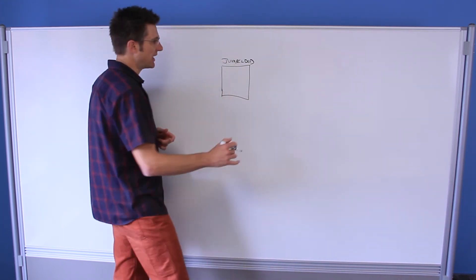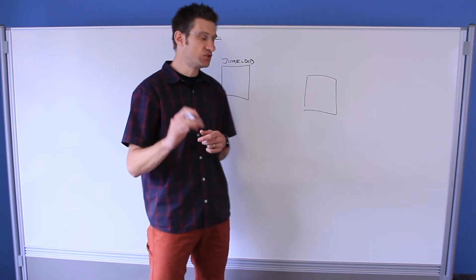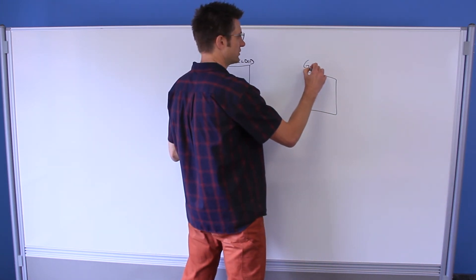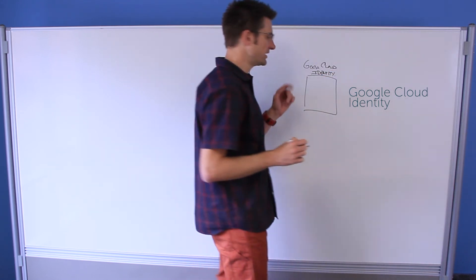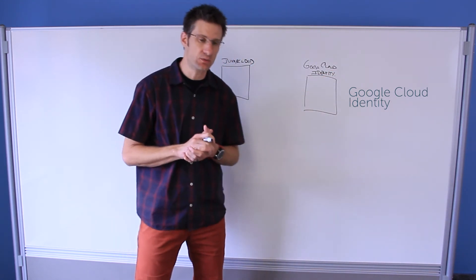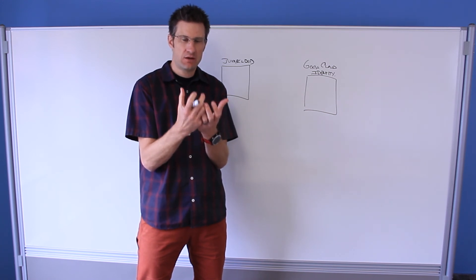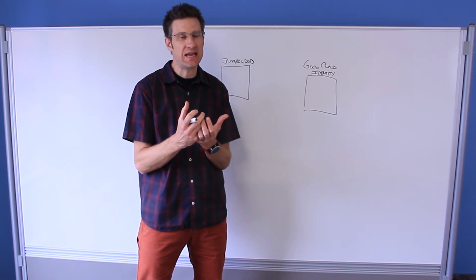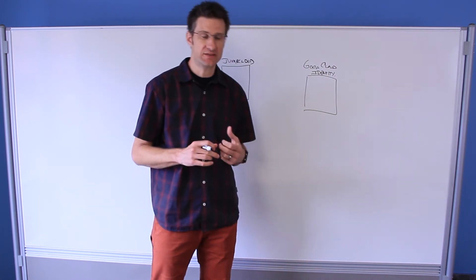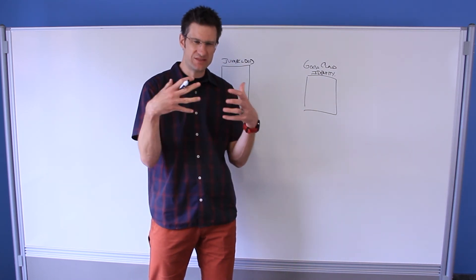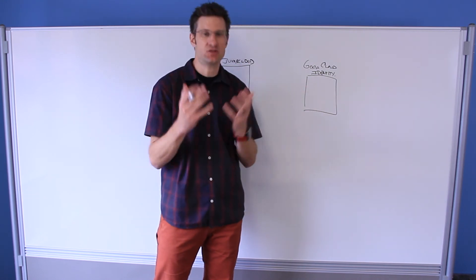So this box we are going to denote as Google Cloud Identity. The interesting release, this is a fairly recent release by Google, was to detach a Google user's identity from the services that the identity can incorporate. For example, in prior versions of Google G Suite, you would buy the G Suite product and you would build user accounts tightly integrated with Gmail or with Calendar or with Drive. Recently Google has detached those two concepts.